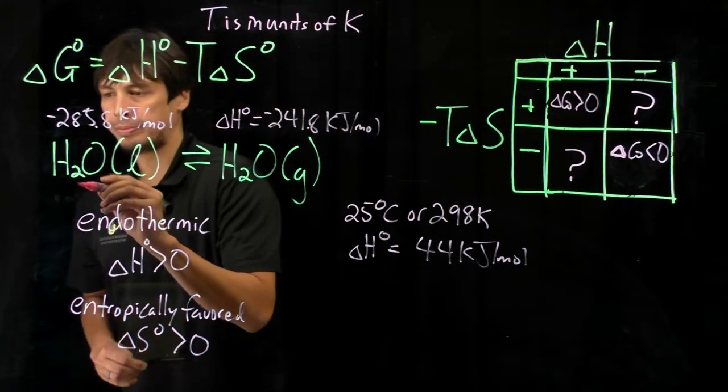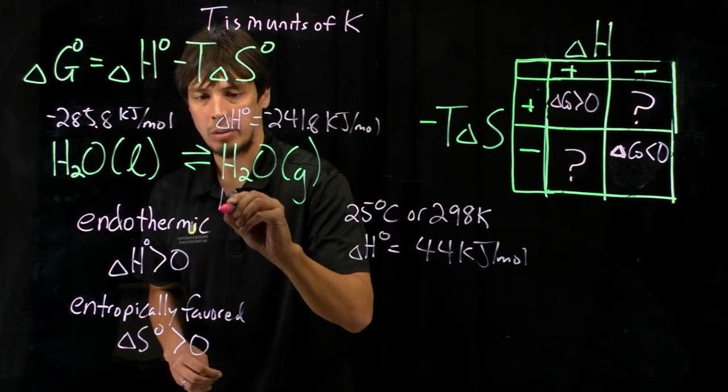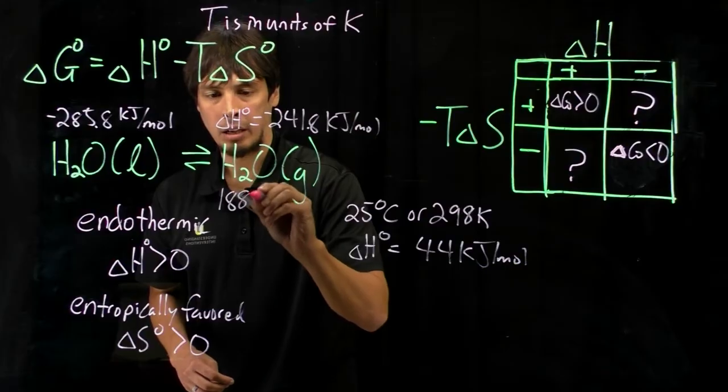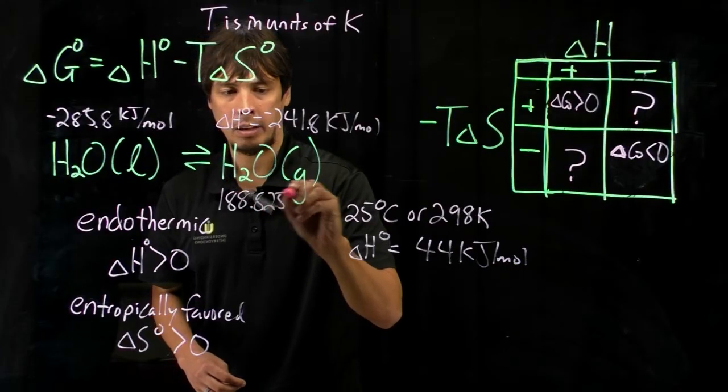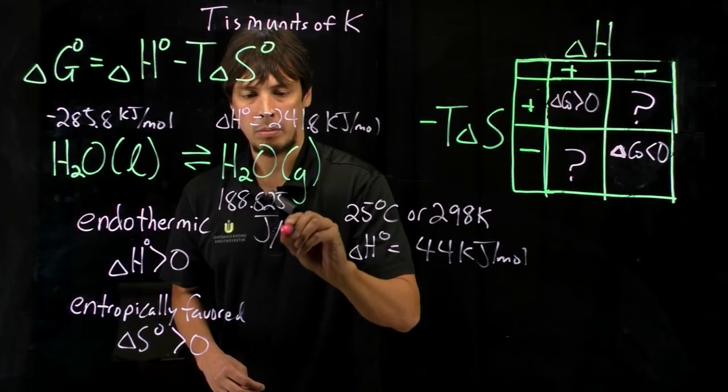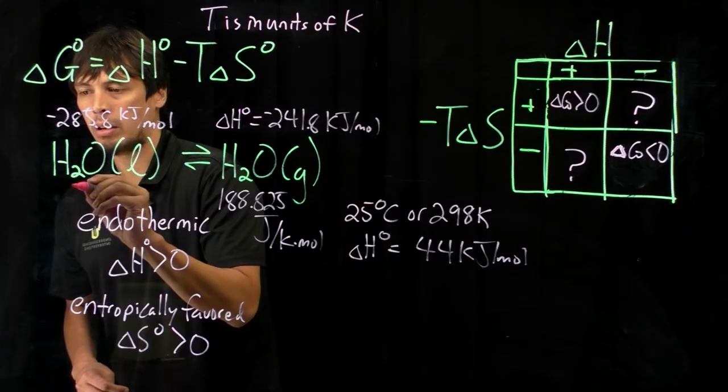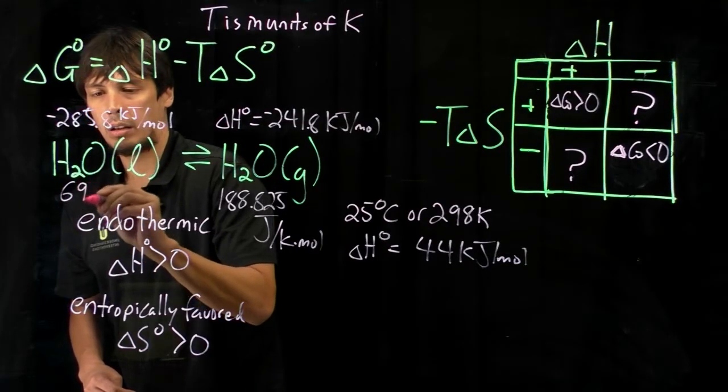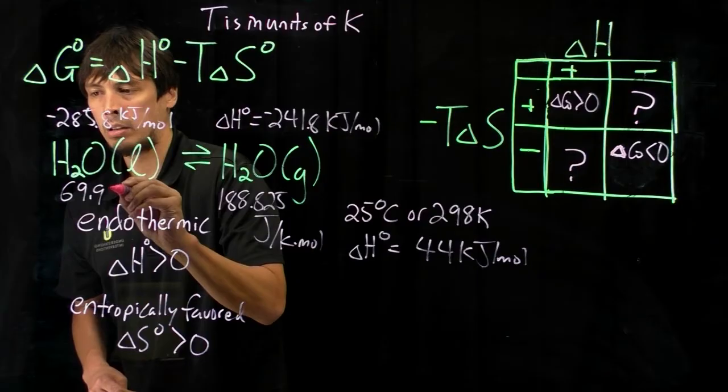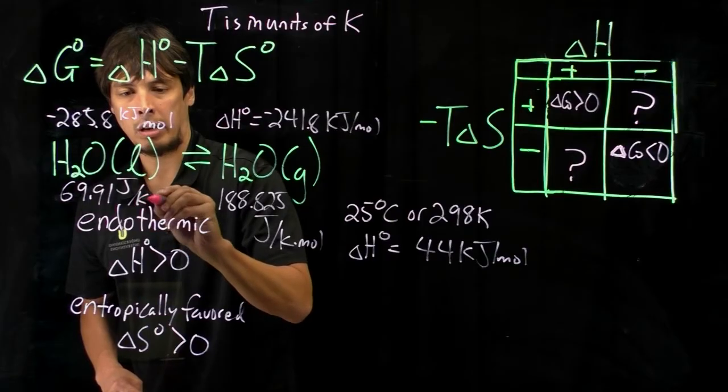For entropy, the entropy for gas is 188.825, and this is in joules per K times moles. And liquid water, 69.91 joules per K moles.